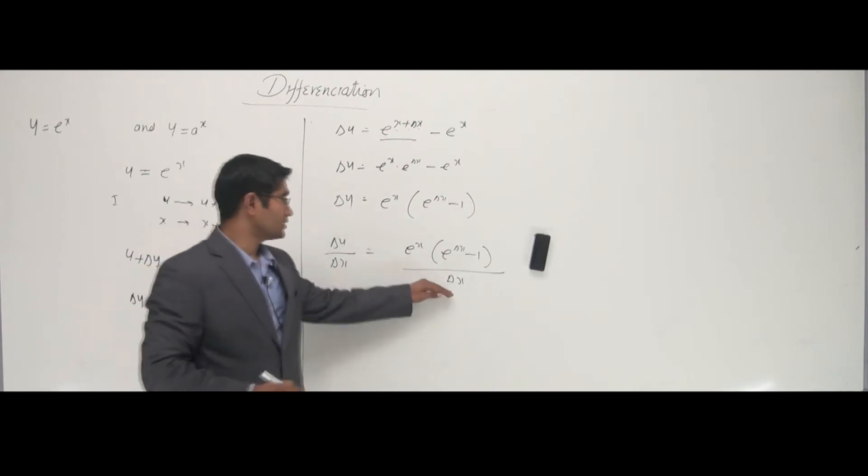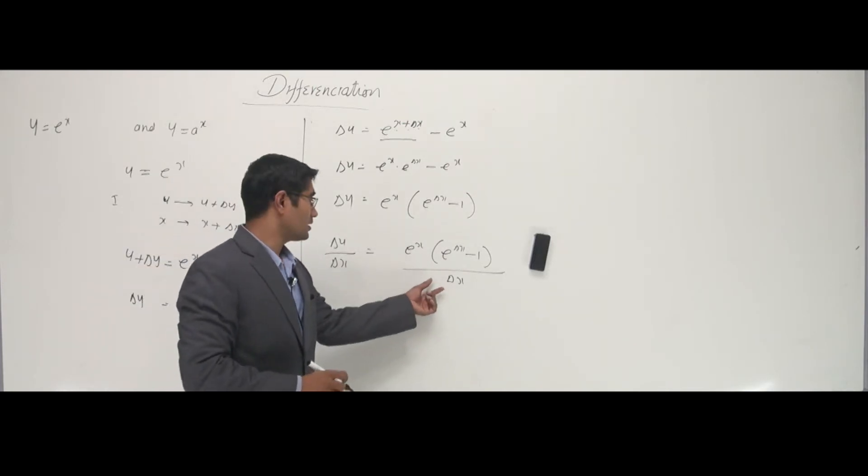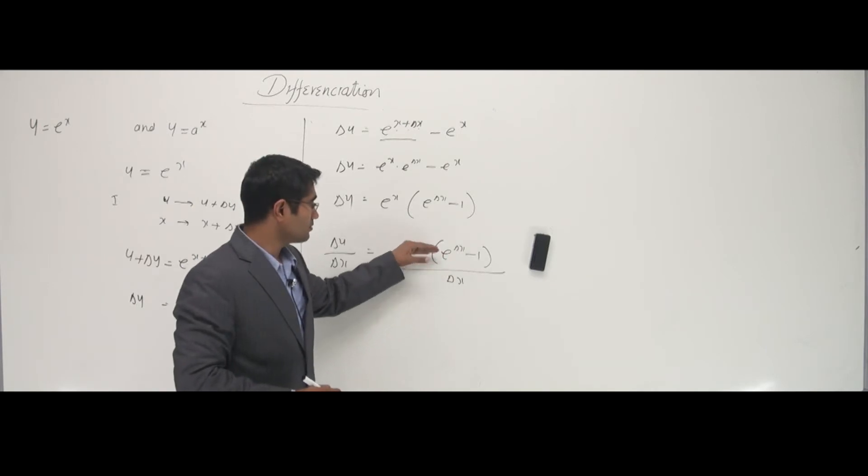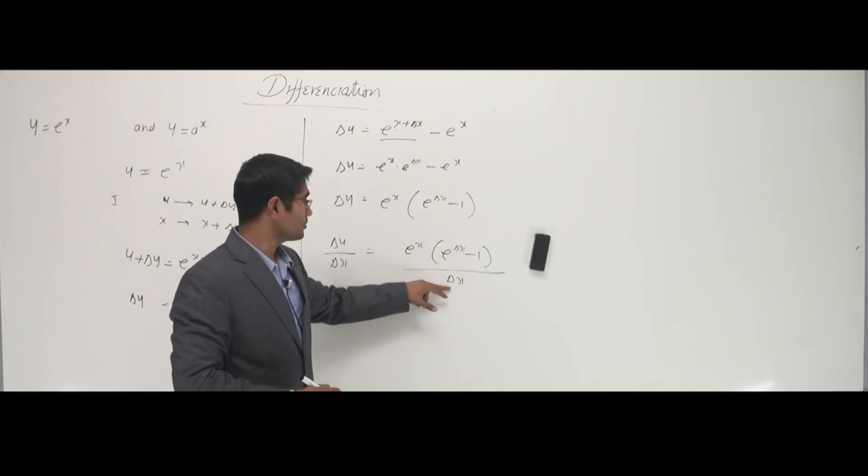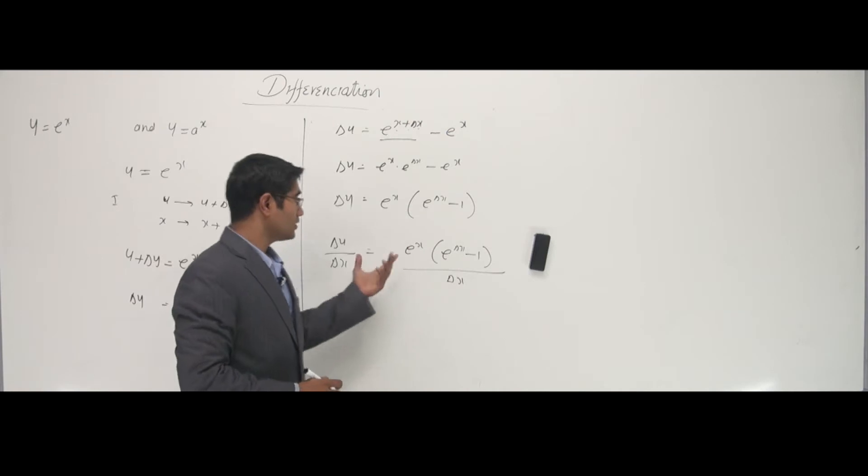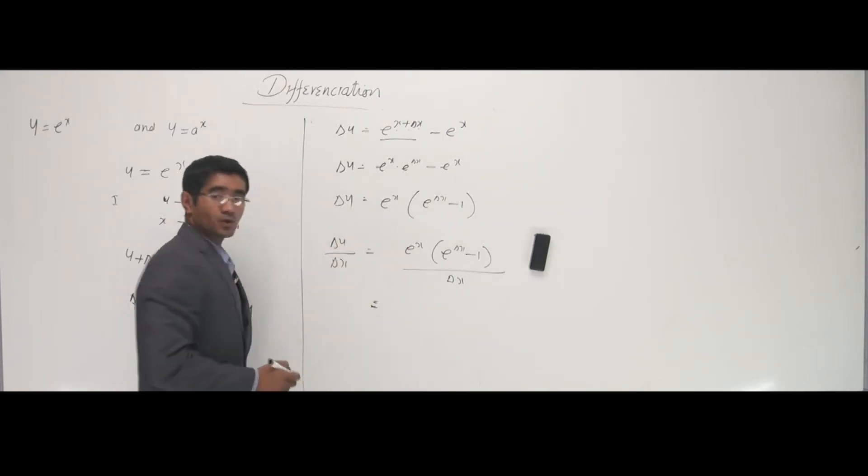Now, can I eliminate delta x? If at all, I substitute limit of delta x as 0. This whole thing by 0 is infinity. Can I cancel this before I apply the limits? No, I can't. So what to do now? Simply, I should know one trick here.